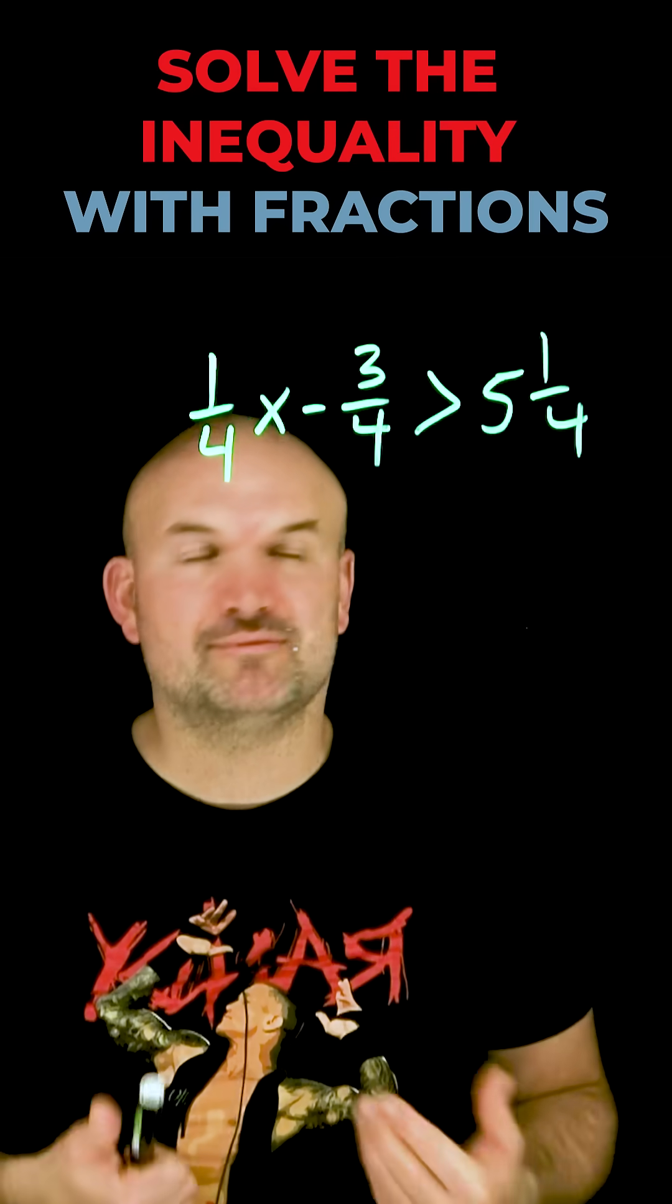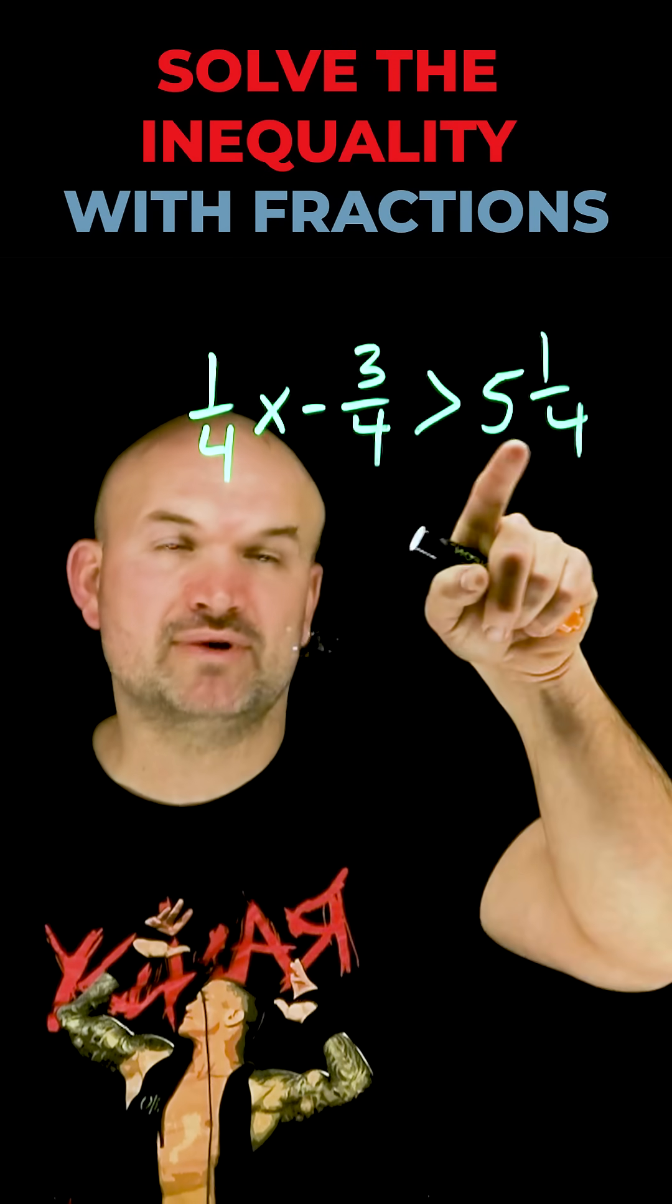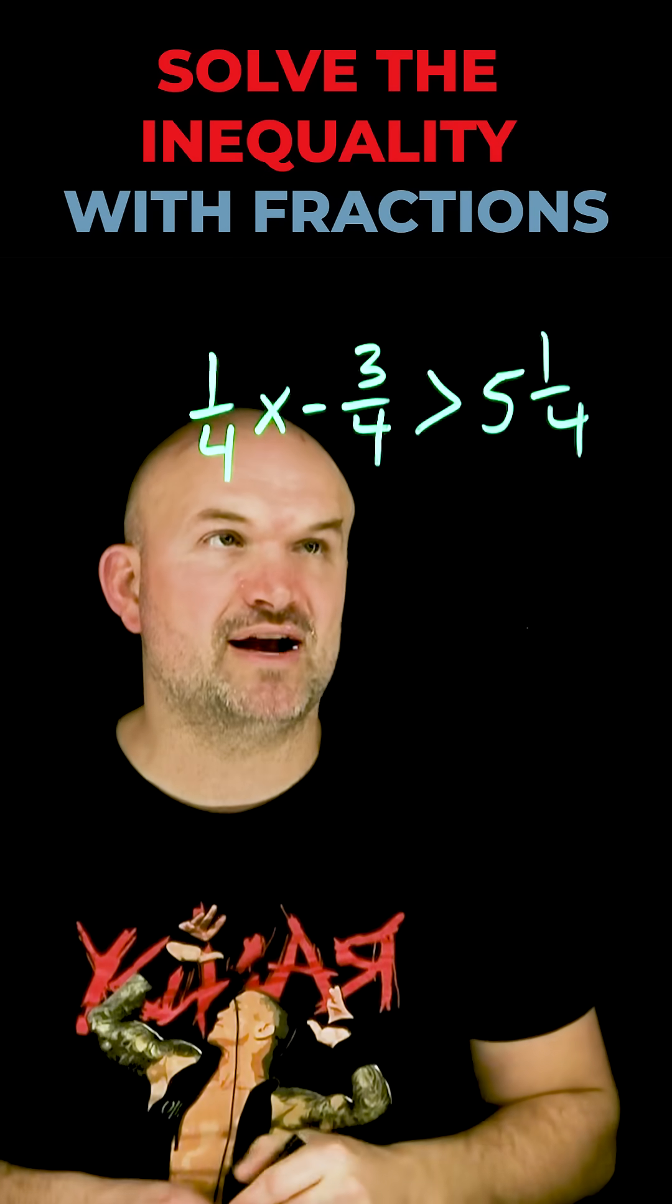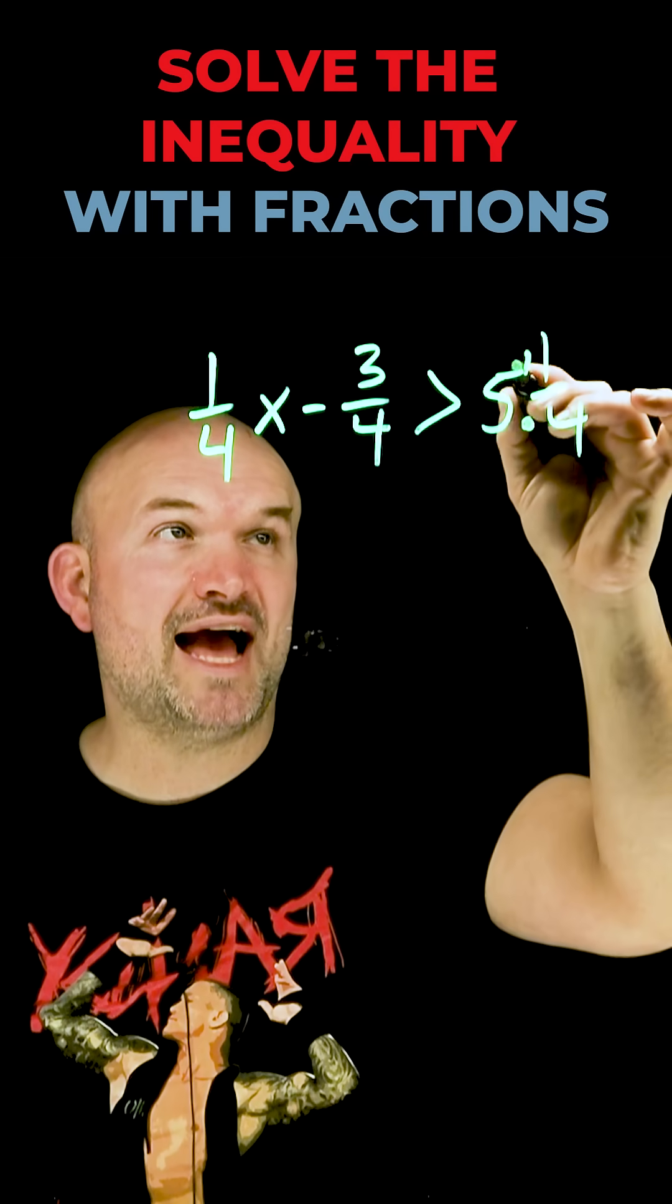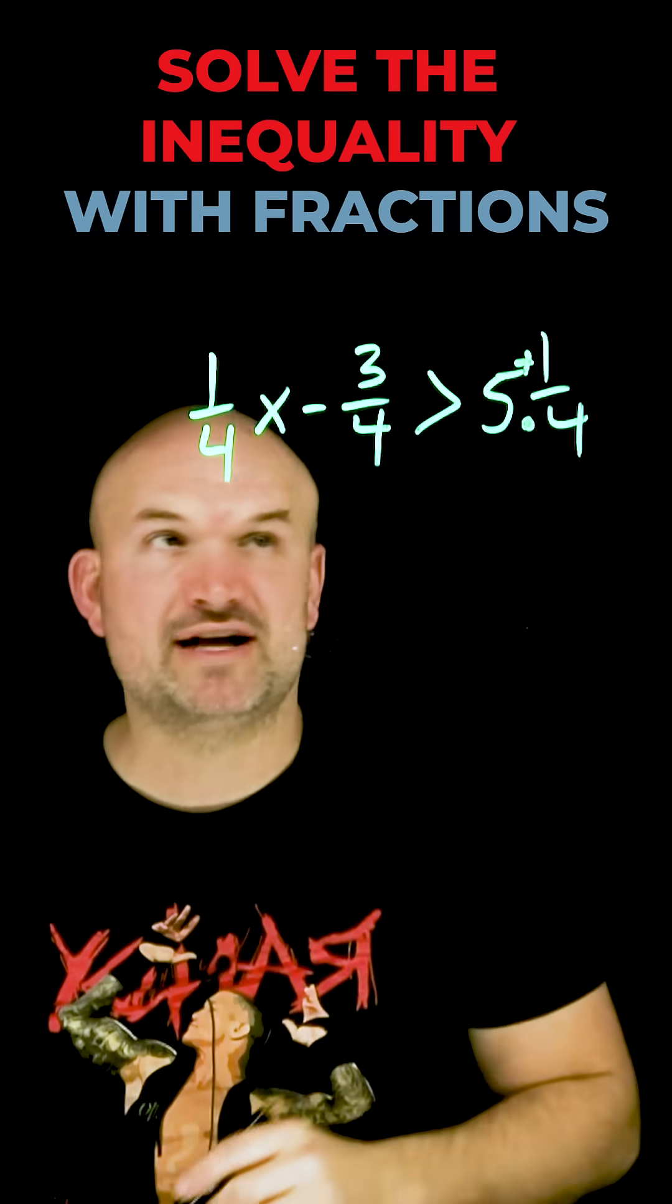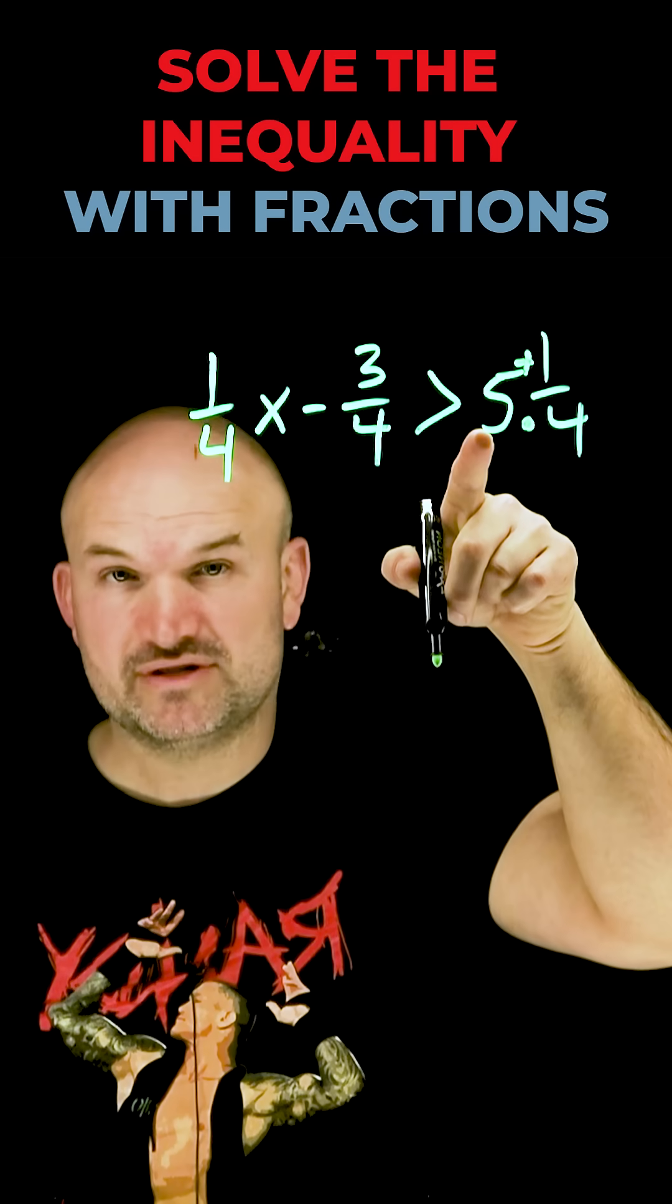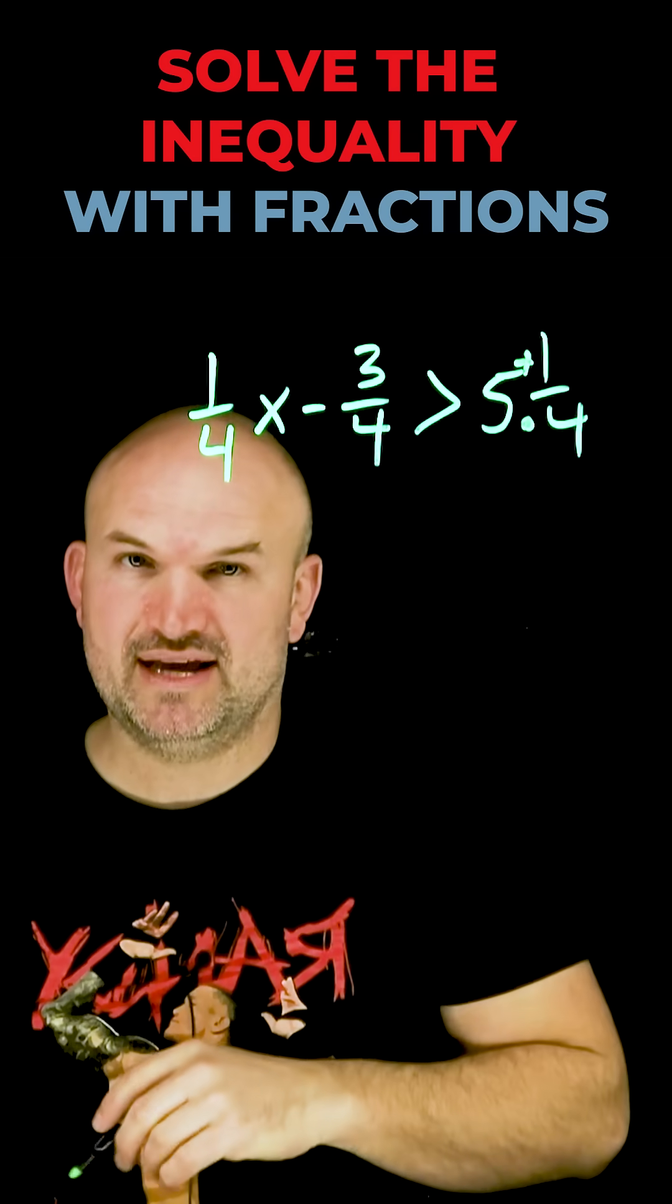Before I can get rid of the fractions, I need to rewrite my mixed number as an improper fraction. To do that, I'll take my denominator, multiply it by my whole part, and then add it to the numerator of my fraction. So 4 times 5 is 20, 20 plus 1 is 21.